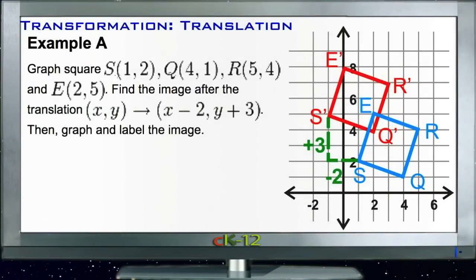Example A asks us to graph square SQRE and find the image after translation, then graph and label the image. The translation says we're going to subtract 2 from each x-coordinate and add 3 to each y-coordinate. Our blue square right here in the bottom right is our original figure.